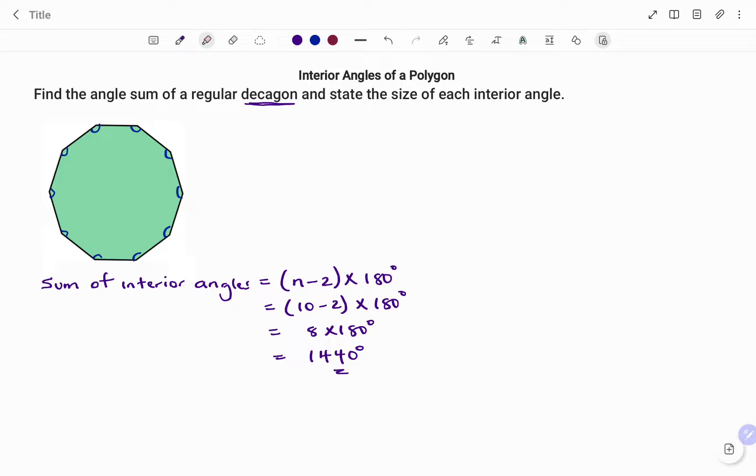The next question says we should state the size of each of the interior angles. Because we know that the number of angles is 10 and we have the sum of the total angle to be 1440 degrees divided by 10, therefore the size of each angle is 144 degrees.